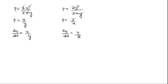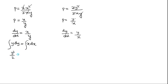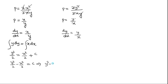Both of these are first-order linear differential equations. For the first equation, dy by dx equals X by Y, we use the variable separable method: Y dy equals X dx. On integrating, we get Y squared by 2 equals X squared by 2 plus C. Taking terms to the left hand side and multiplying through, Y squared minus X squared equals 2C.